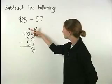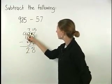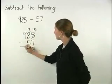In the tens column, 7 minus 5 is 2. And in the hundreds column, 9 minus 0 is 9.